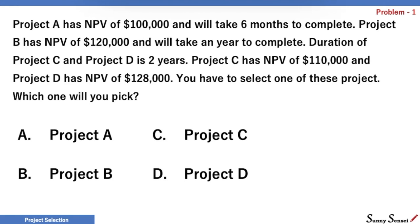I hope you are ready with your answer. Let's look at the problem again. For each project, we have the NPV. We also have the duration for each project. Project A is for 6 months, B is for a year, C and D are for 2 years. NPV includes the time value of money, so we can simply ignore the information about the project duration. Duration is there just to confuse us.